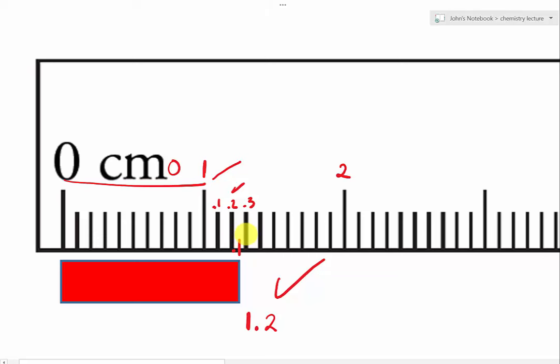So half of that is going to be five. So there you go. We have five. This gives us one point two five centimeters.